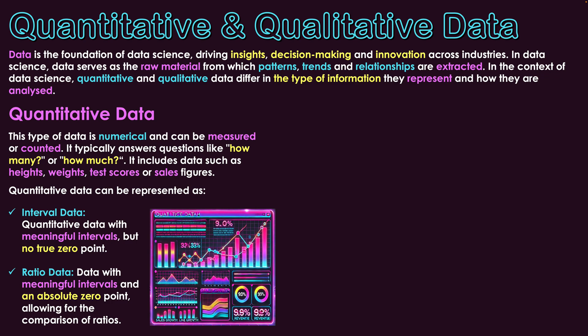With quantitative data we have subcategories: interval data and ratio data. Interval data is quantitative data with meaningful intervals but no true zero point — it does not specifically start at zero and go up incrementally. An example is temperature. Temperature does have a zero value, but we can go beneath it, so it's not like temperature starts at zero and goes up. The meaningful intervals tell us how hot or cold something is, but there's no true starting zero point.